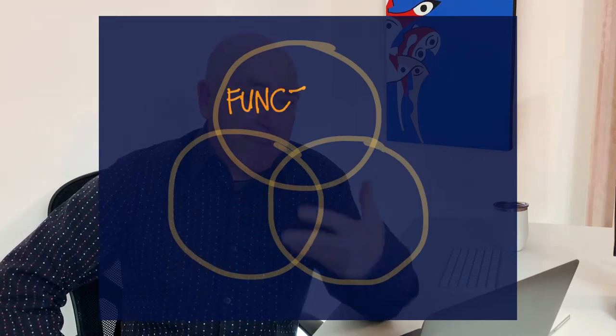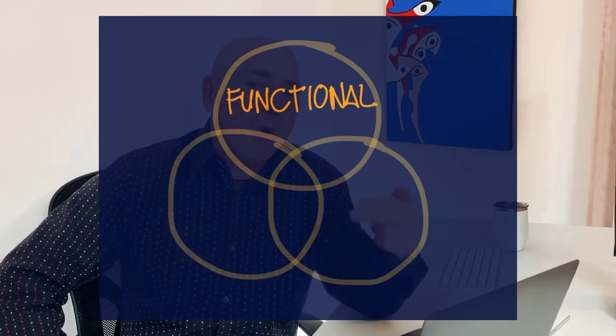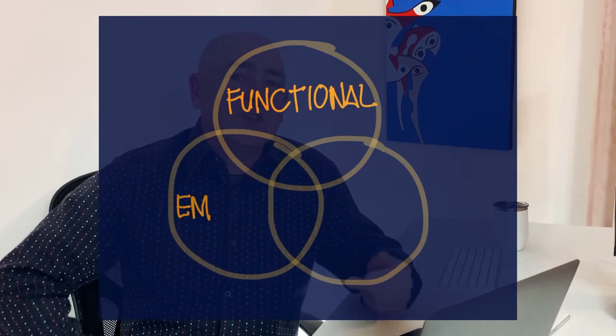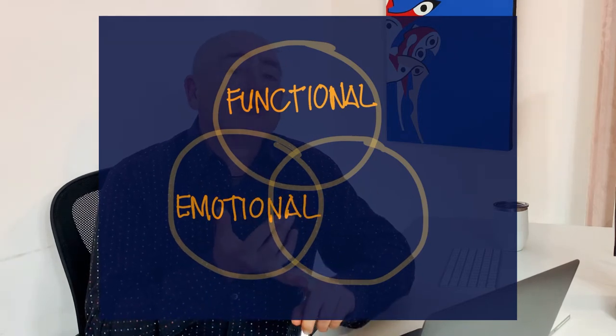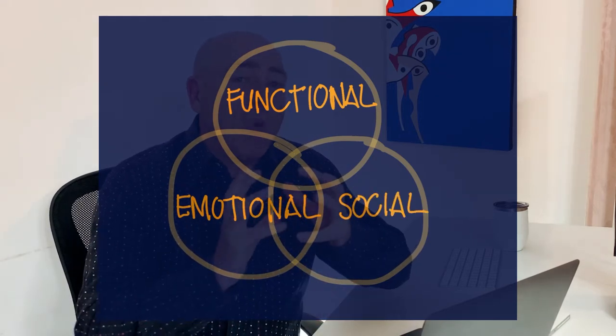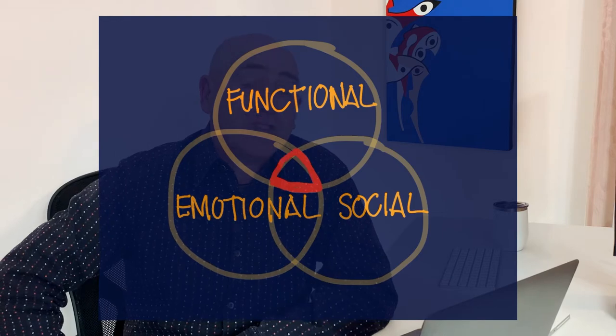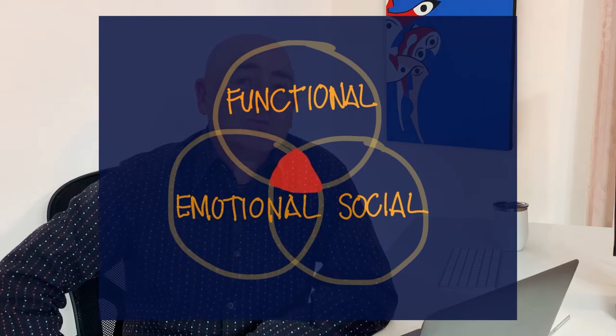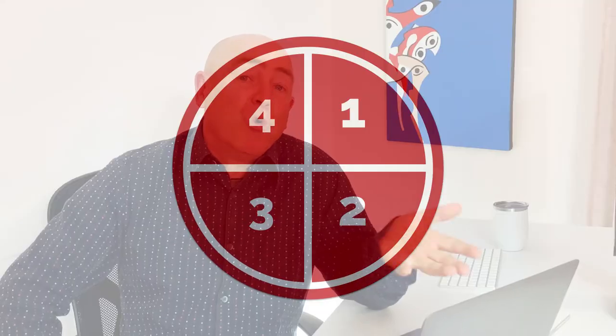In some cases, it might be enough to simply talk about the functional benefits to your customer. But generally speaking, you'll get better results if you can combine all three elements — the functional, the emotional and the social — into one powerful, compelling sales video. Now we have our basic content mapped out, we need a structure or a map to organize them all. We'll talk about this in our next video.